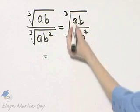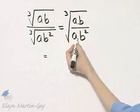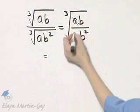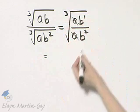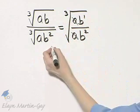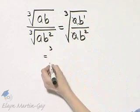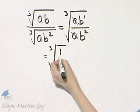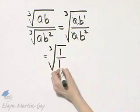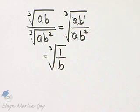Notice the A's divide out. The A's divide out, and I have B to the 1 over B squared, so this is the cube root of 1 over B. I would always simplify before trying to rationalize, if possible.